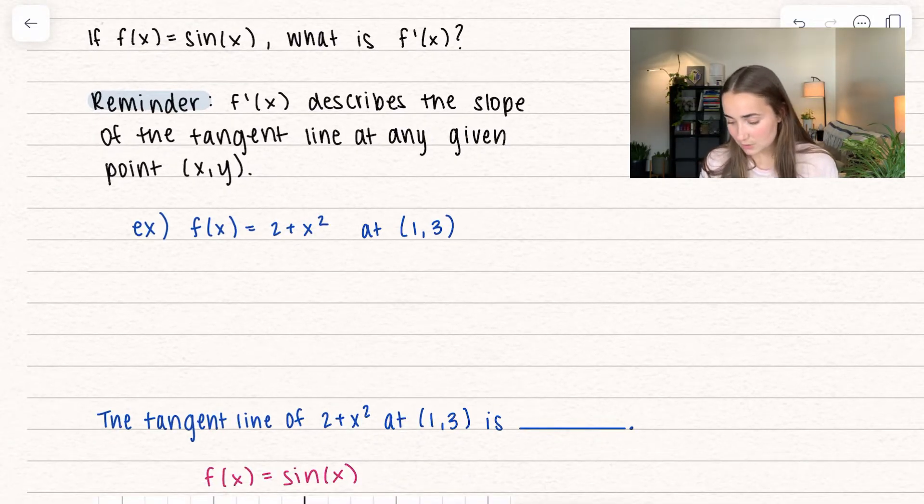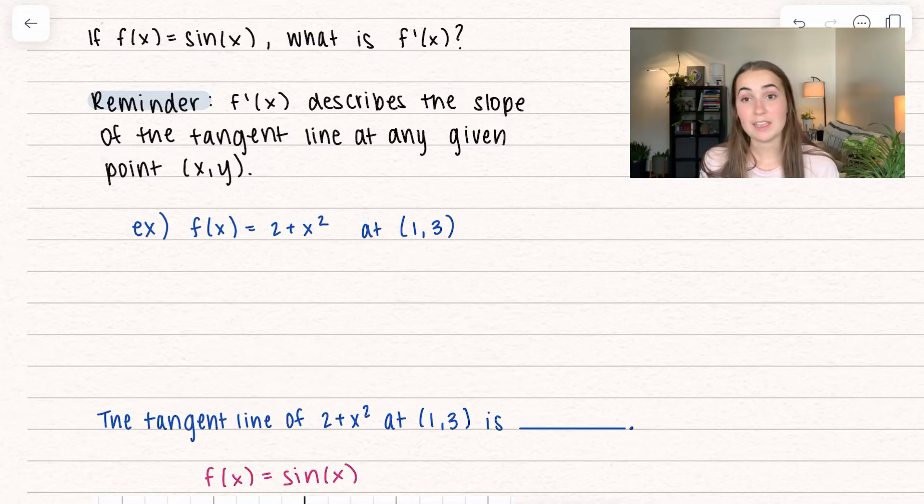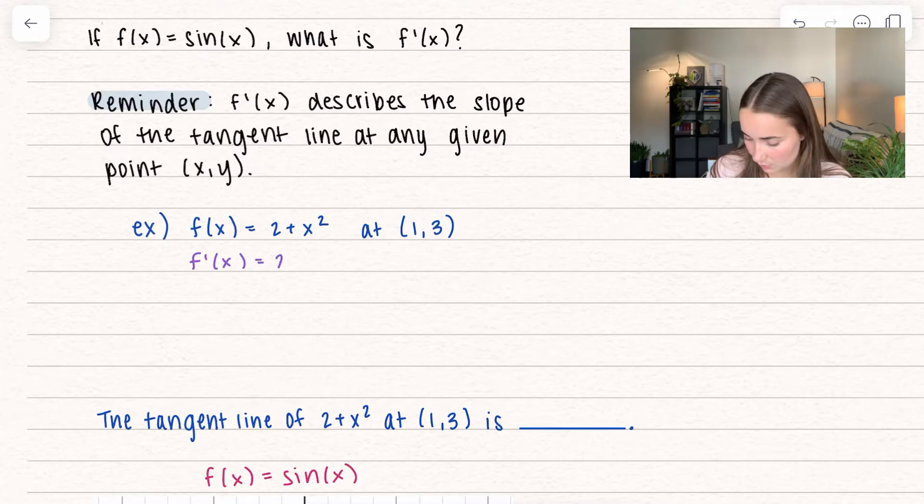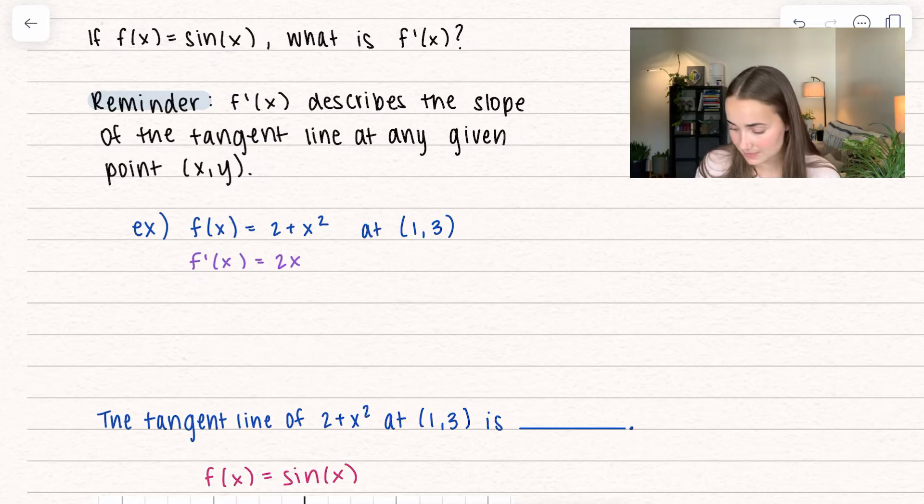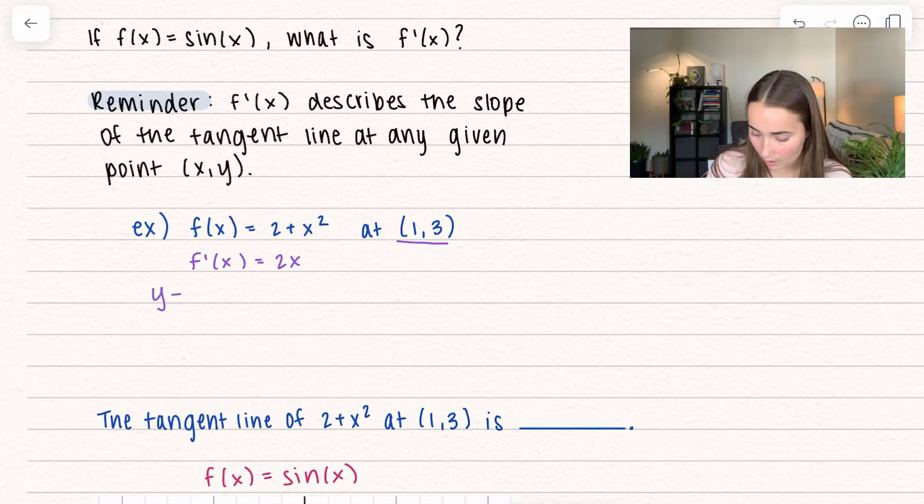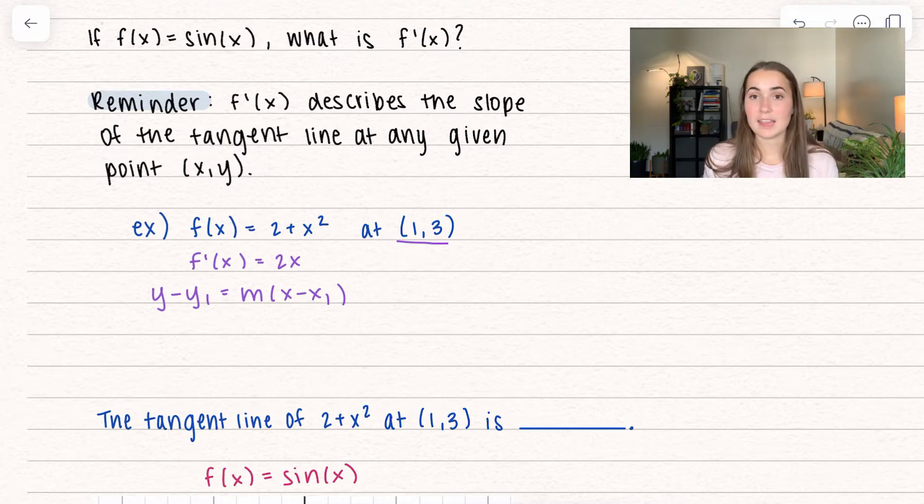So f of x equals 2 plus x squared. If I were to take the derivative of this, I get f prime of x is just equal to 2x. This helps me find the tangent line at any point, and I have a specific point right here. We have the form y minus y1 equals m times x minus x1. That's the line that just skims the function at that point.